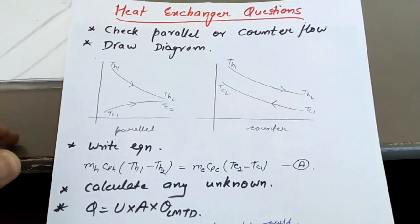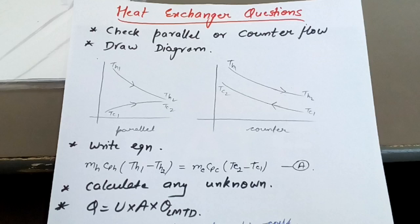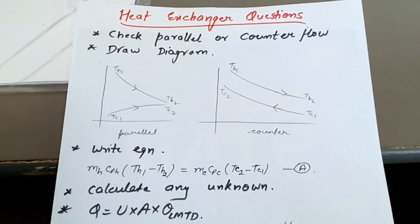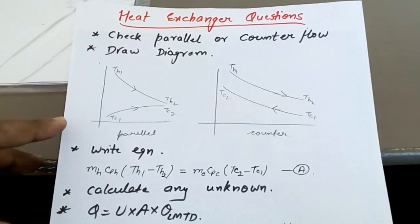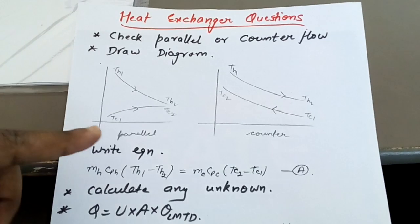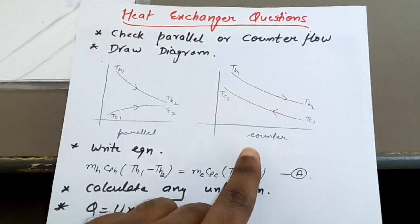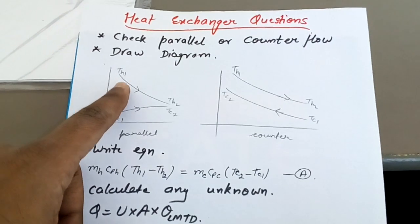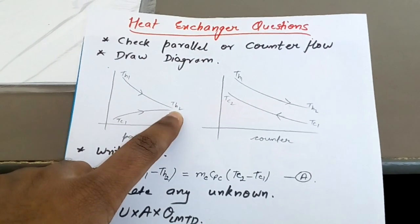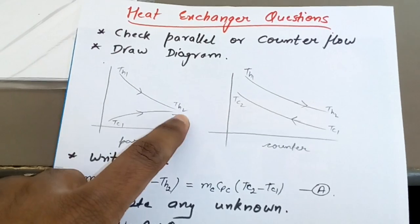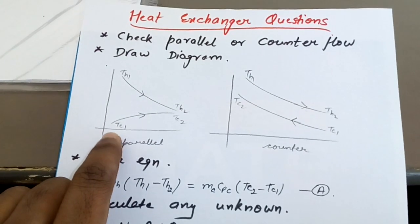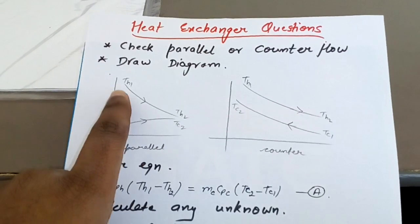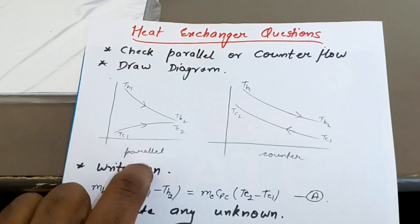First you have to check in the question whether it is given parallel flow or counter flow, then you have to draw the corresponding diagram. For parallel flow, the diagram shows the temperature of the hot fluid decreasing from TH1 to TH2, and the temperature of the cold fluid rising from TC1 to TC2 — that is parallel flow.